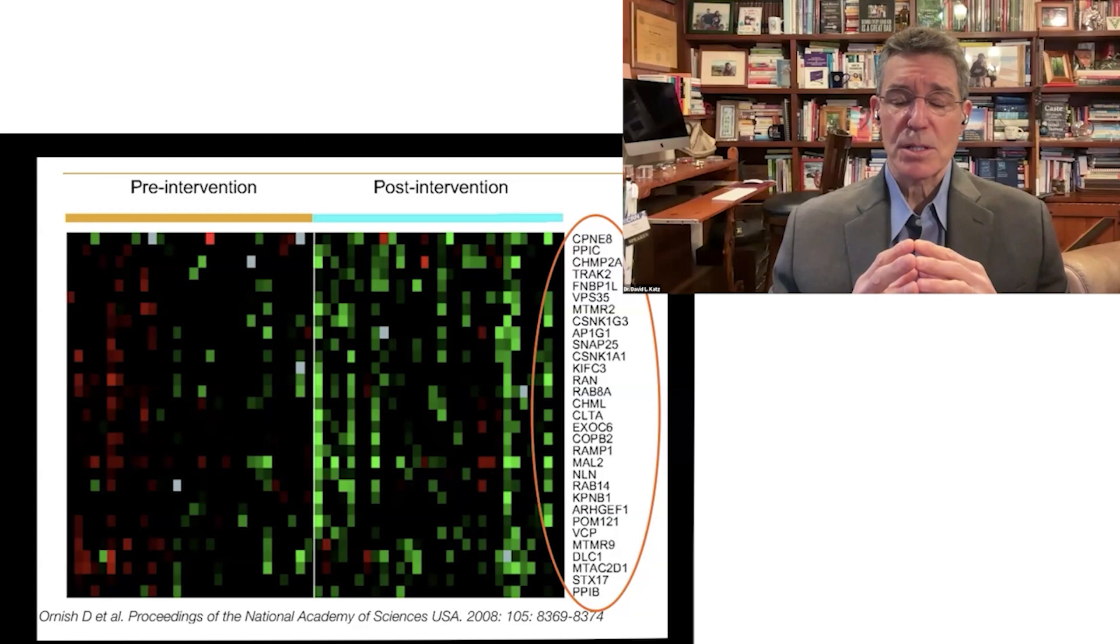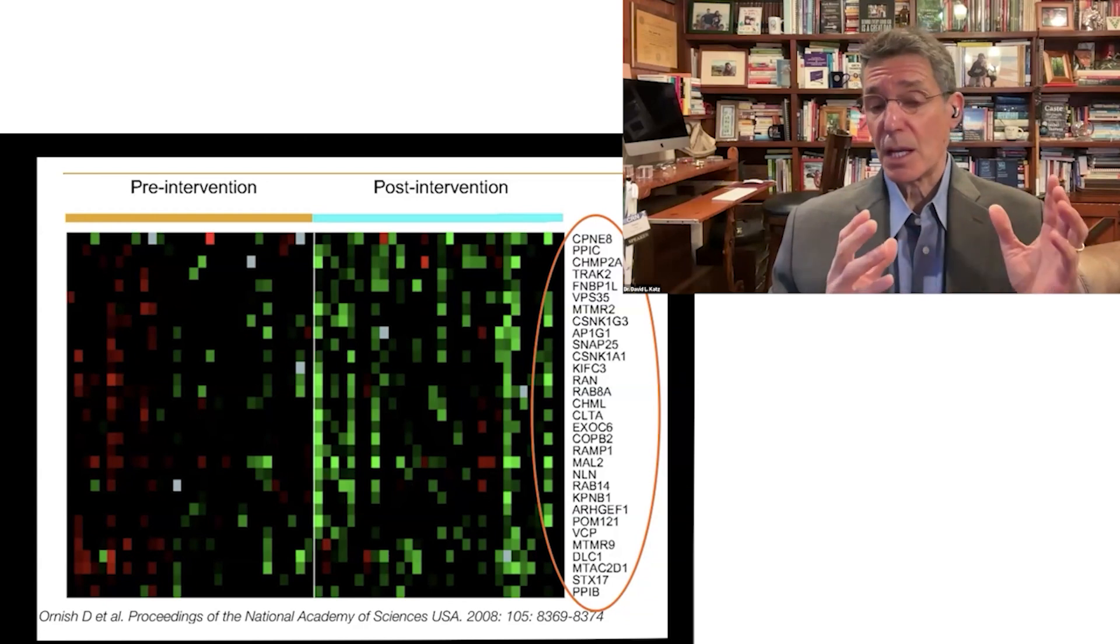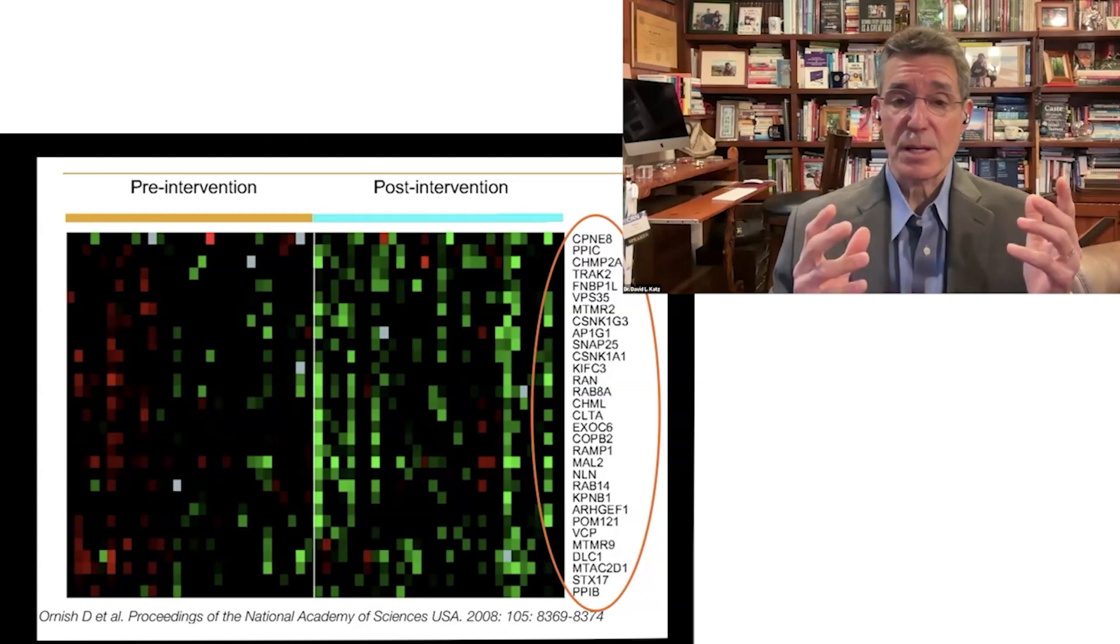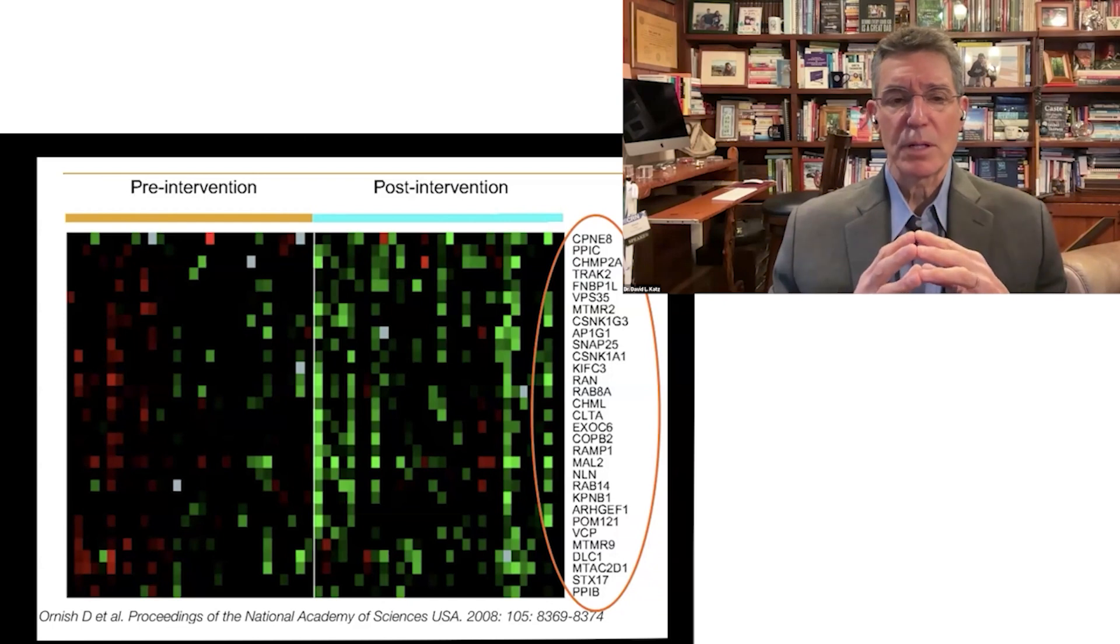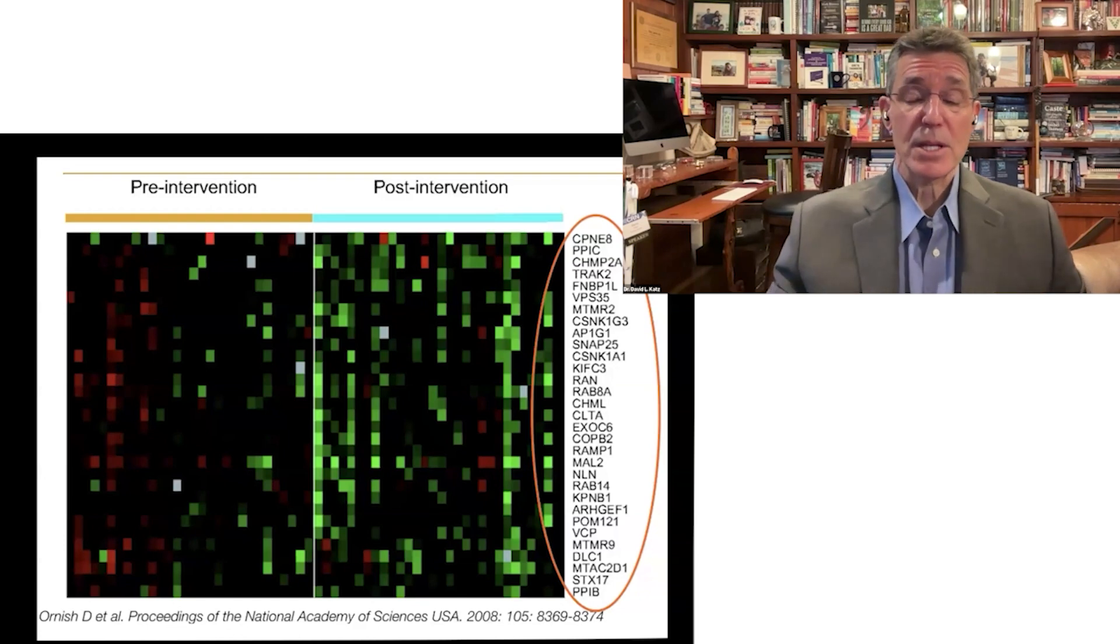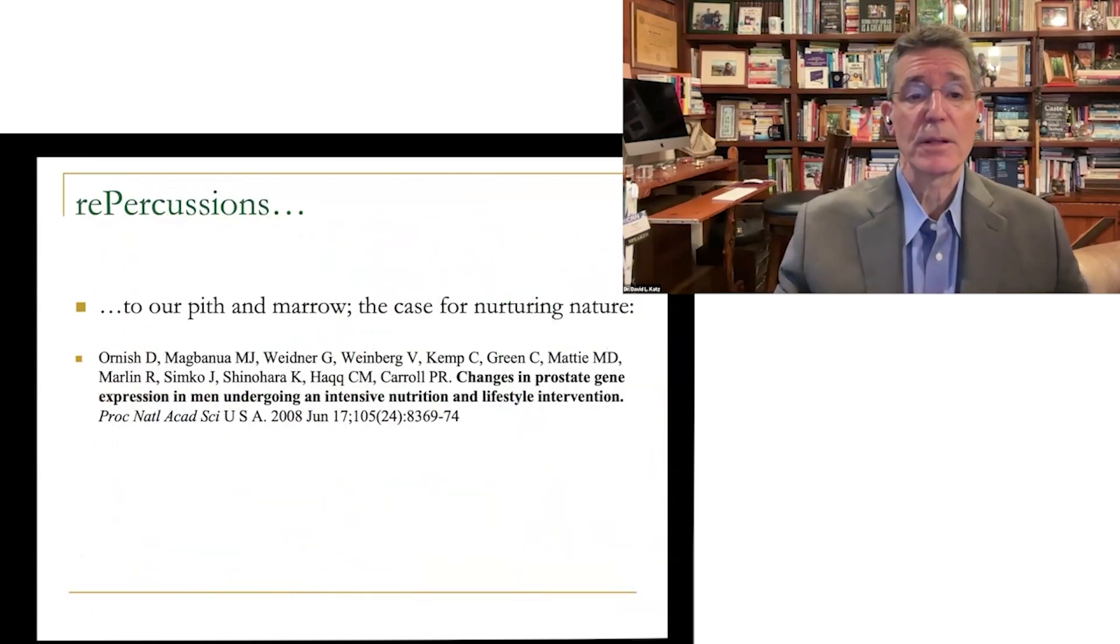Studies like this one indicate we can nurture nature. DNA, with very rare exception, is not destiny because although we can't change the genes we have, at least not yet, I rather hope we never will be able to, we certainly can change what the genes we have do. And lifestyle and diet exert powerful influences there.